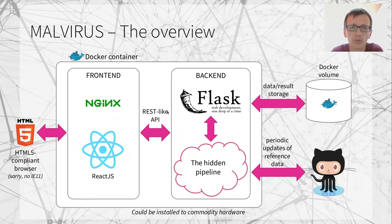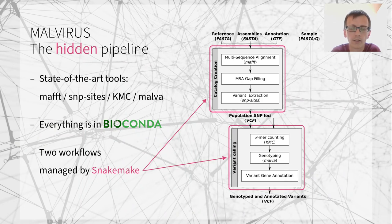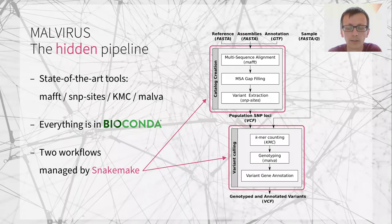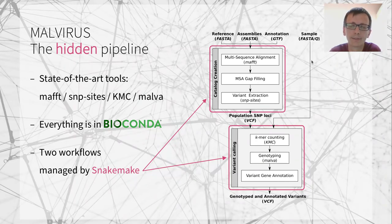At the core of the application there is a computational pipeline that is hidden from the user's viewpoint but is clearly one of the most important parts. It is managed by Snakemake and is divided into two parts: the creation of a catalog of variants in a population, and the variant calling on a given sample of reads.